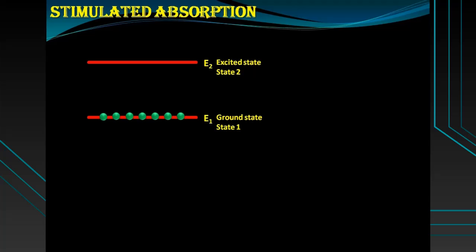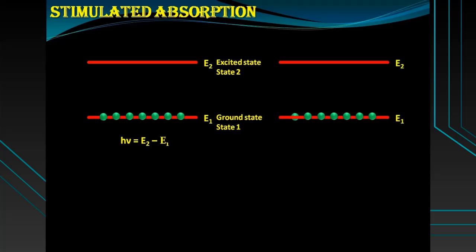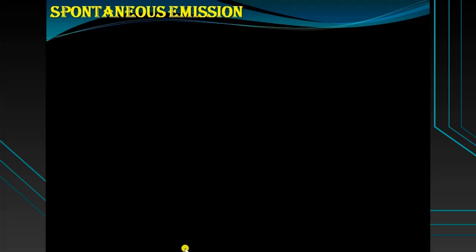As we all know, there are different energy levels in an atom. The electrons very close to the nucleus have the lowest energy level. Suppose the energy of the ground state is E1 and of the higher energy state is E2. When a photon of energy hν, equal to the energy difference E2 minus E1, is incident on an electron, the electron jumps from ground state to excited state. This process is called stimulated absorption.